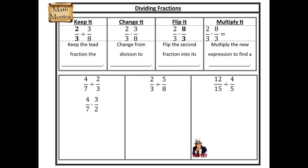Since multiplication and division are inverse operations, they work very similarly when we deal with fractions. In order to turn multiplication — something we know how to do — into division, we just need to invert it. We're going to multiply by the reciprocal instead of divide by a value. The easiest way to remember that is: keep it, change it, flip it, multiply it — four steps often overlooked.